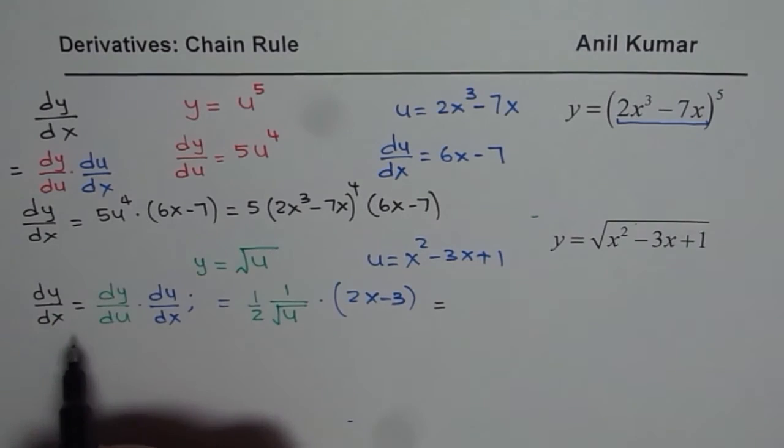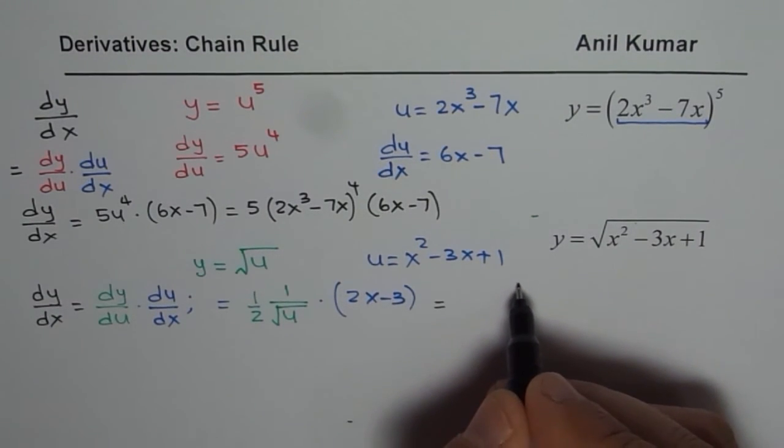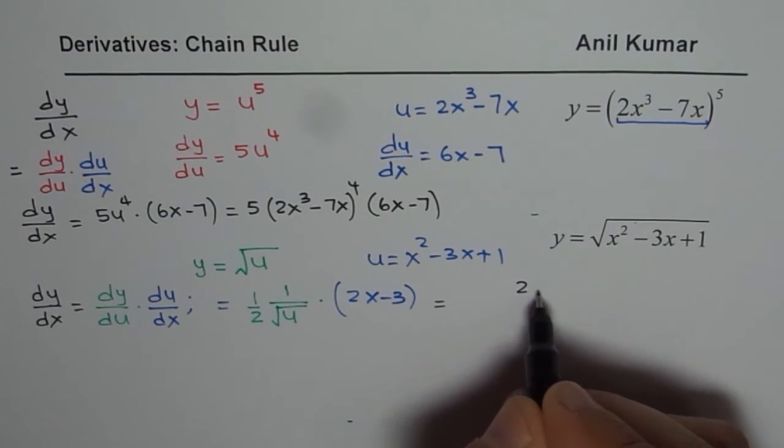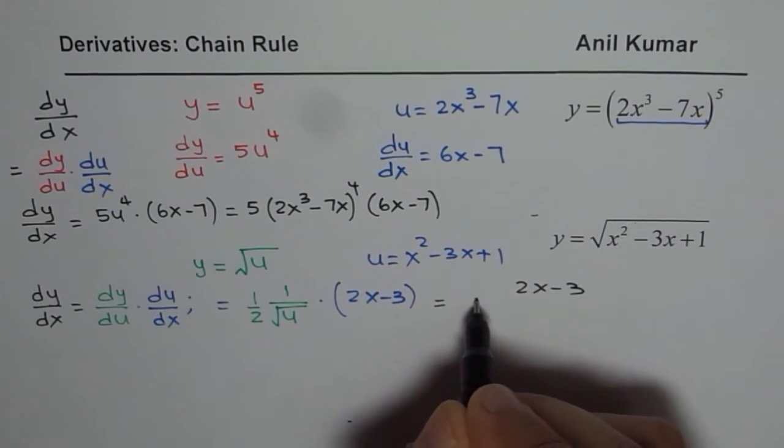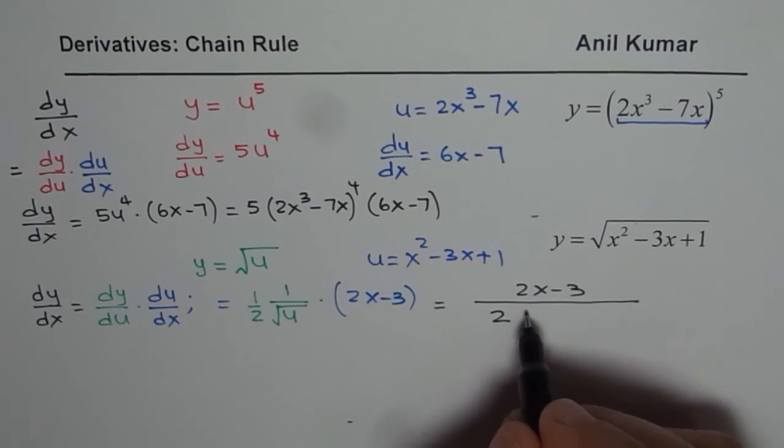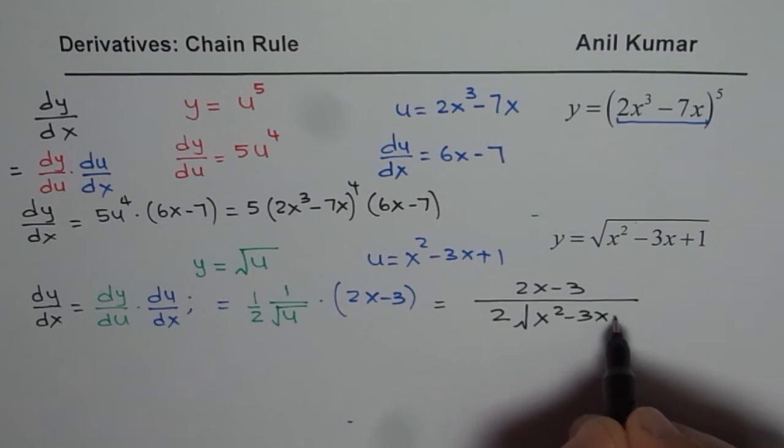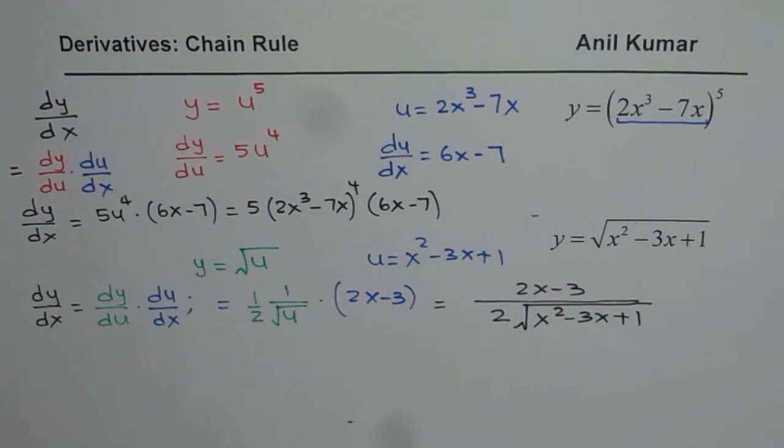And now, in the next step, which is our final step to write down the answer, we'll replace u with what it is in terms of x. We need to write in terms of the original function x. So, it is 2x - 3 in the numerator divided by 2 square root of u, which is square root of x² - 3x + 1. That is how you would actually find derivative of a function which is composed of two or more functions. You get the idea.